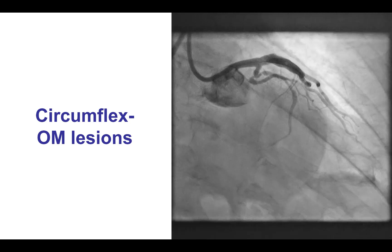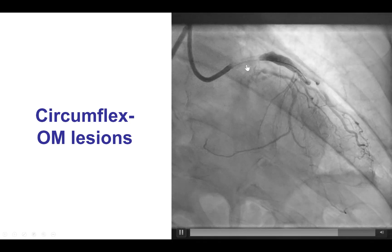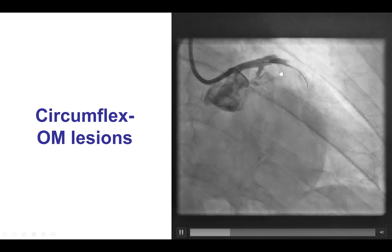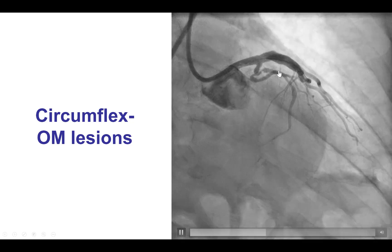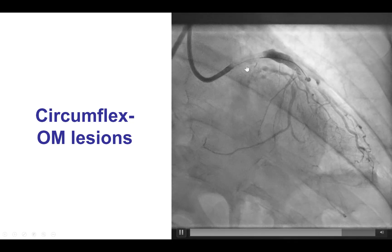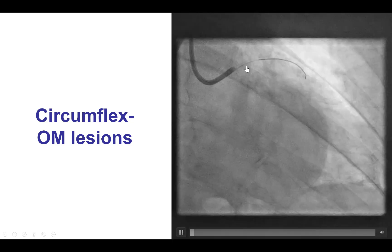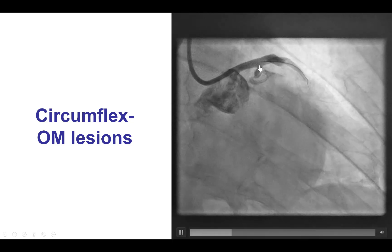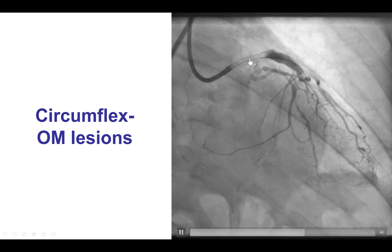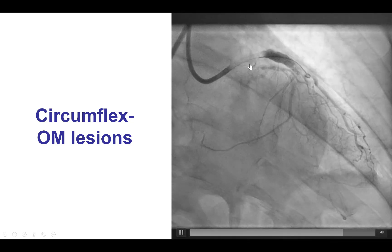This is the target lesion. It is a lesion in the circumflex and the obtuse marginal branch. In this view, it appears that this is a Medina 0 — no significant disease in the proximal main vessel.